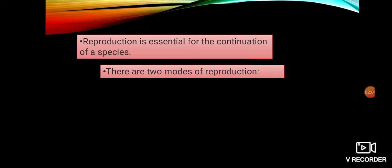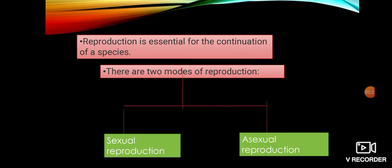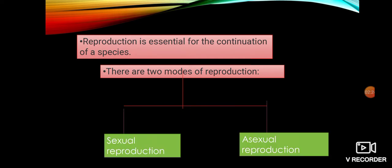This is an important topic. You should remember that there are two modes of reproduction — it is many times asked in one-mark questions. You should be clear that there are two types of reproduction: sexual reproduction and asexual reproduction.